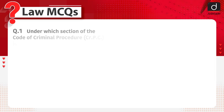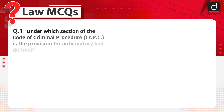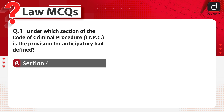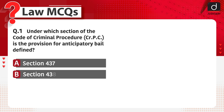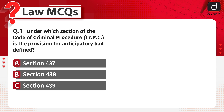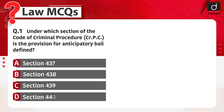First question: Under which section of the Code of Criminal Procedure is the provision for anticipatory bail defined? Section 437, Section 438, Section 439, or Section 440.